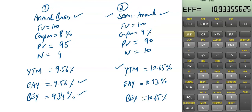One last thing: this bond equivalent yield is different from the one covered previously in corporate finance, quants, and even earlier in this chapter. That bond equivalent yield was calculated for money market instruments, whereas this bond equivalent yield has been calculated for bonds. Thank you so much.